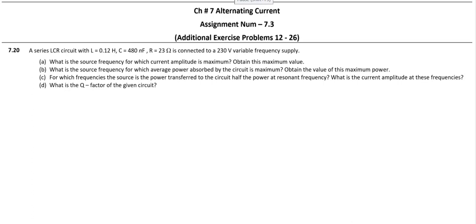Hello students, we have additional exercise problem 7.20 of chapter 7 in this video. The question is about a series LCR circuit with L equals 0.12 Henry, C equals 420 nanofarad, R equals 23 ohm, connected to a 230 volt variable frequency supply. What we are asked to find out is: